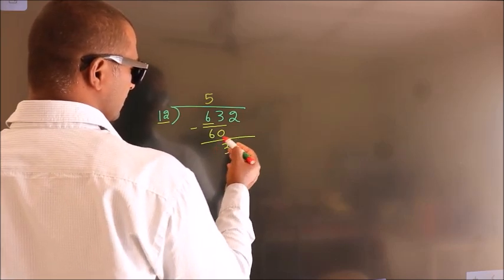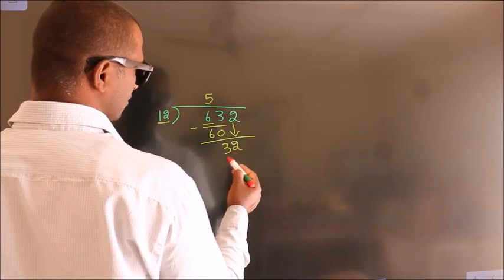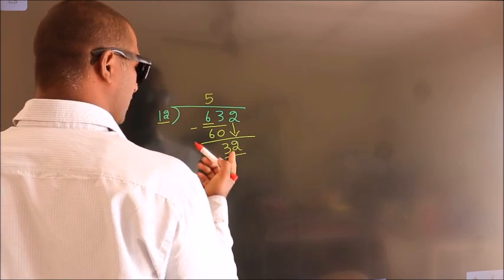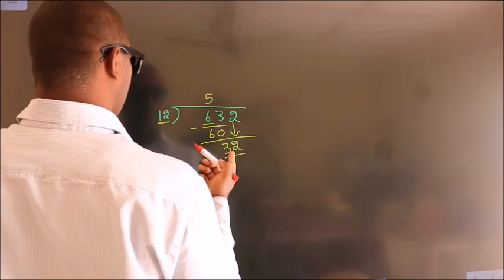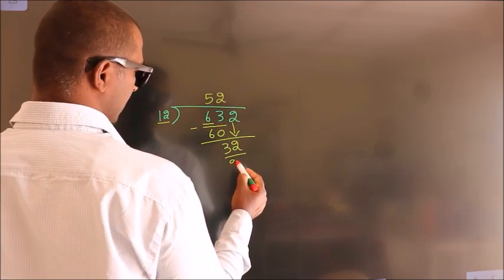After this, bring down the beside number. So 2 down, so 32. A number close to 32 in 12 table is 12 twos, 24.